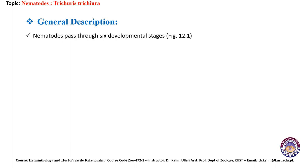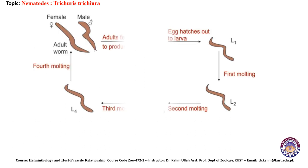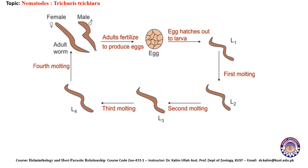General description: nematodes pass through six developmental stages, as given in Figure 12.1 — the adult worm, the egg stage, and four larval stages from Larvae 1 to Larvae 4. Each larval stage transforms by shedding of the cuticle, also called molting.